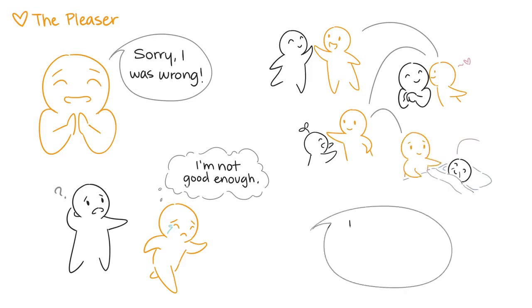In order for pleasers to cultivate stable relationships, they have to be honest about their own feelings, rather than trying to do what is expected of them.